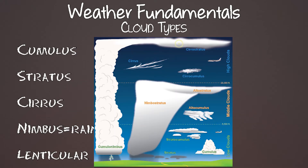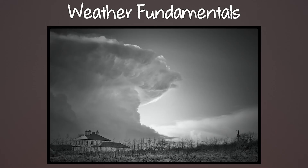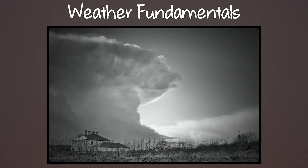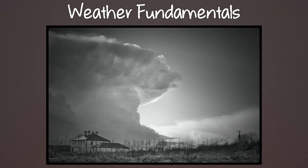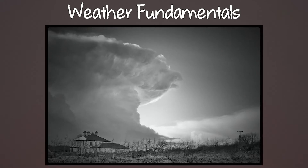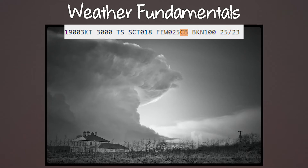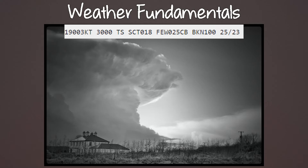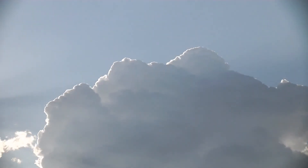We have a couple of cloud types: low, middle, high, or clouds with vertical development. Low clouds are usually below 6,000 feet. Middle clouds are from 6,000 to 20,000, and high clouds are above 20,000. Clouds with vertical development are usually cumulus clouds that build into towering cumulus or cumulonimbus and form thunderstorms due to convection — the up-down motion of moist warm unstable air. Cumulonimbus clouds have lots of moisture and unstable air, producing hail, thunderstorms, lightning, and wind shear. On your METAR or ATIS you'll see CB for cumulonimbus. The up and down drafts inside can exceed 3,000 feet per minute.